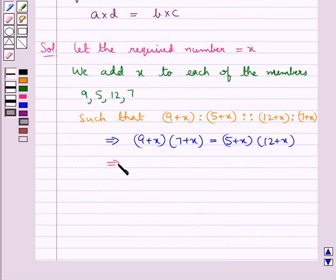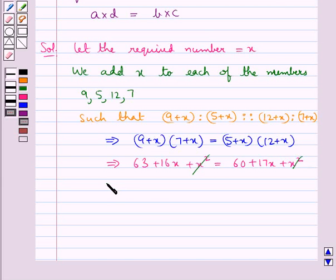This gives us 63 + 16X + X² = 60 + 17X + X². X² cancels on both sides. We get 17X - 16X = 63 - 60, which gives us X = 3.